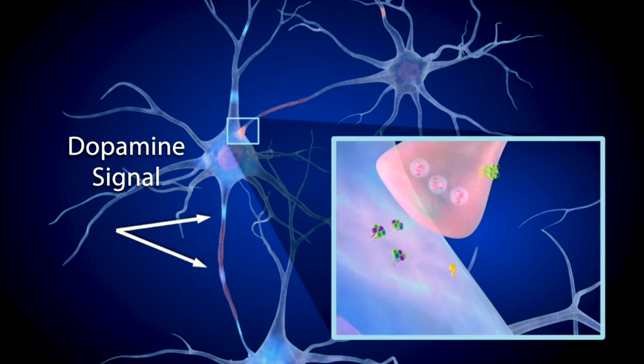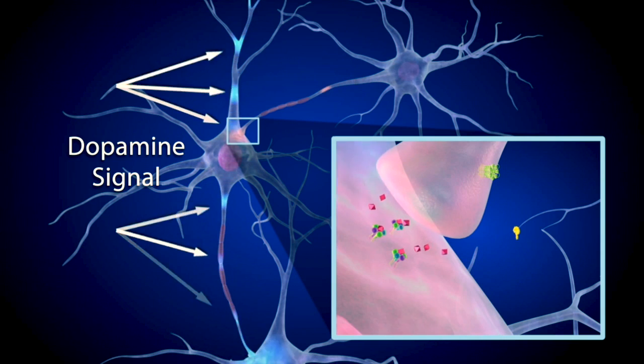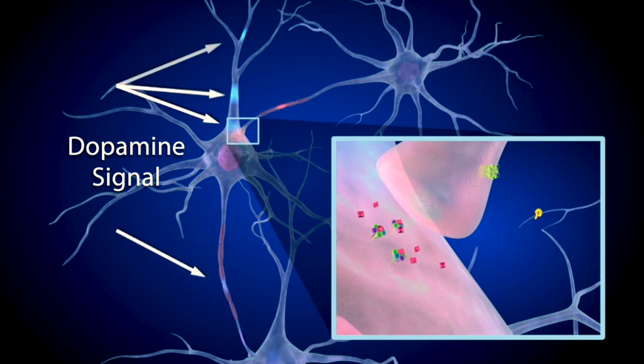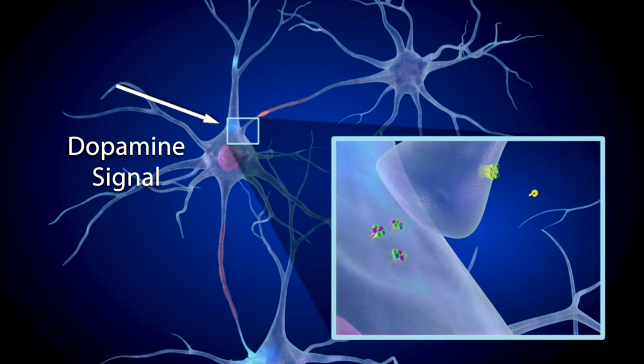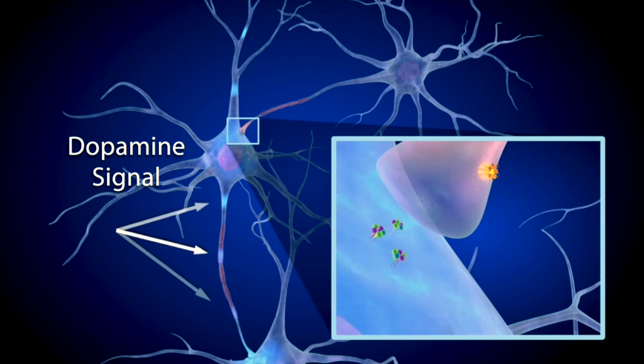Endocannabinoids and other mechanisms that regulate dopamine activity help the brain develop, learn, adapt, and navigate a complex world.